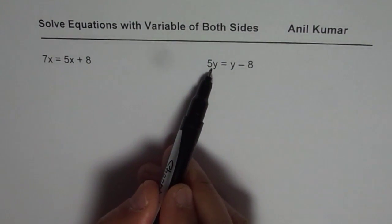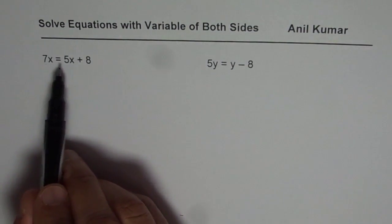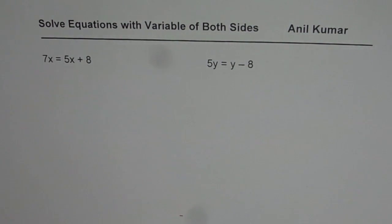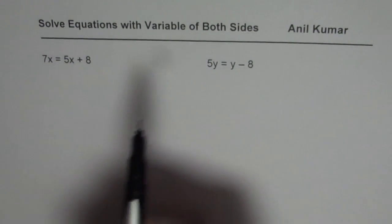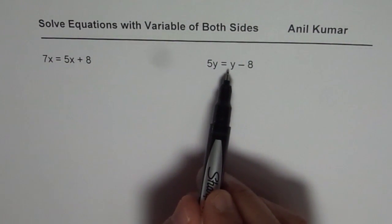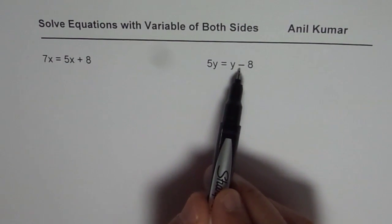We have variables on both sides of equality. Variables could be x, y, or any letter. So the first equation is 7x equals 5x plus 8. The second one is 5y minus y equals y minus 8.